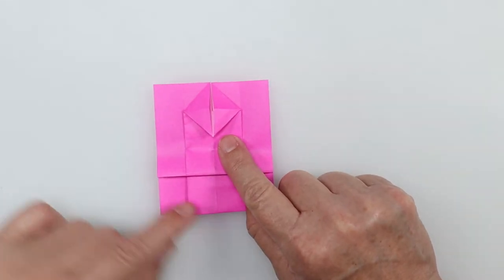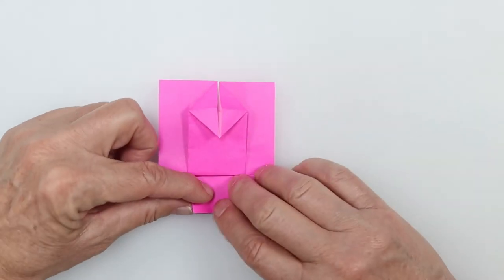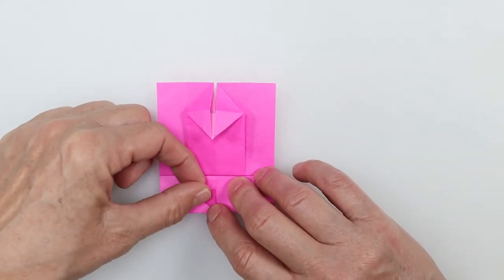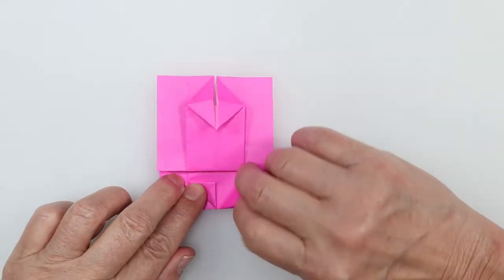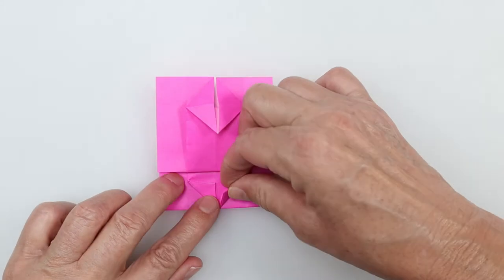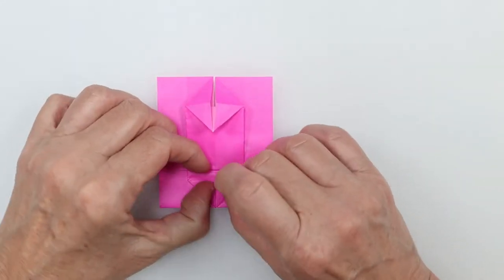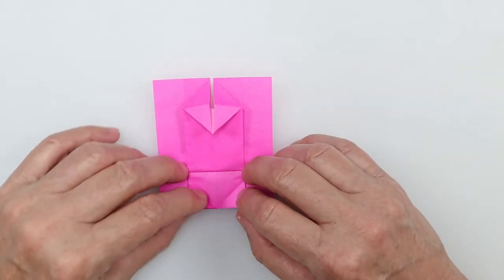I'm going to do the same thing on this bottom layer, but this bottom layer is a lot thicker, so I'm just going to have to give it an extra sharp crease. But I'm folding these little corners right to that center crease. And here I really want to make sure that my creases are nice and sharp. Open it up.